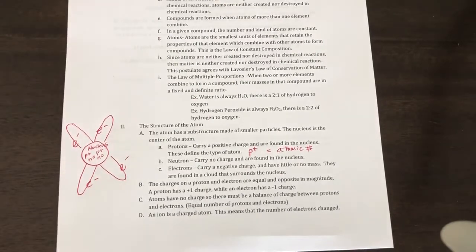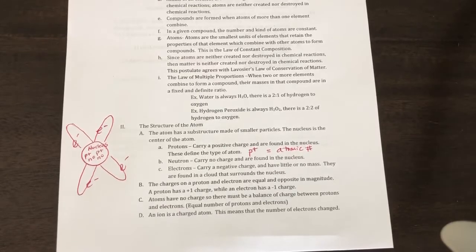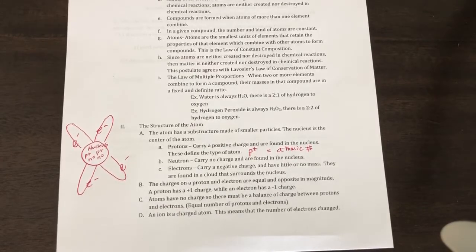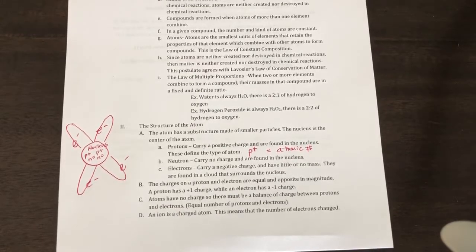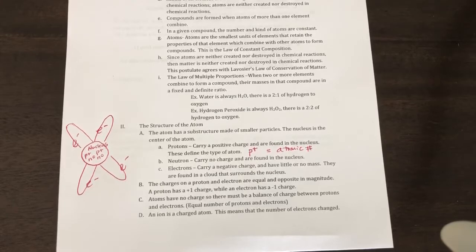Neutrons have no charge, neutral charge, and they're found in the nucleus. Pretty much the proton and neutron have the same mass, so they're going to create the mass of the atom. The electrons carry a negative charge and have little or no mass. They're found in a cloud that surrounds the nucleus.